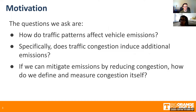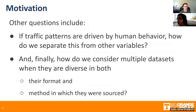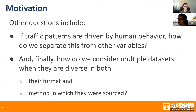If we can mitigate emissions by reducing congestion, how do we define a measure of congestion itself? Other questions include: if traffic patterns are driven by human behavior, how do we separate this from other variables? And finally, how do we consider multiple datasets when they're diverse in both their formats and the method in which they were sourced?